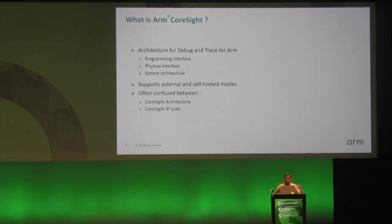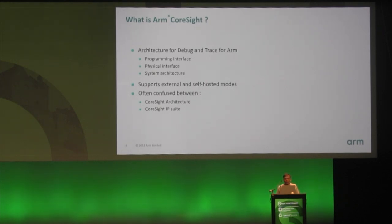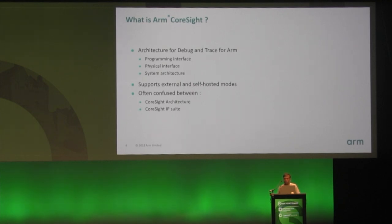It defines things like how do you find out what components are in the system, how you identify different components, and sometimes it also defines physical interfaces like the trace bus that carries trace information around the system. It defines the bus used to access the programming interface of components, and sometimes it defines external hardware input ports like the JTAG port and how you connect them into the CoreSight system to enable external as well as internal debugging.